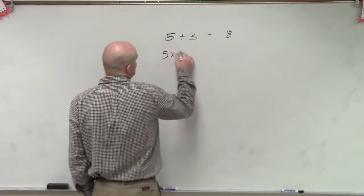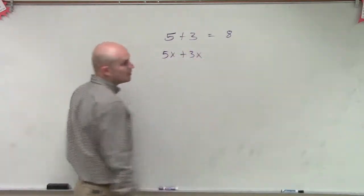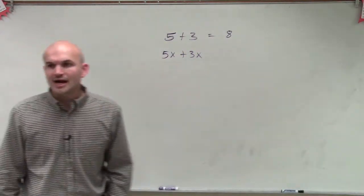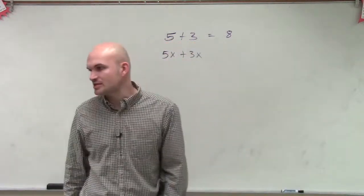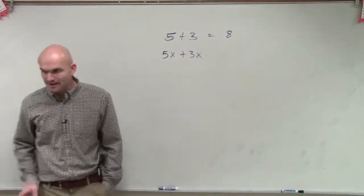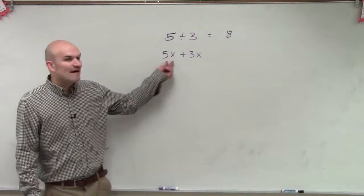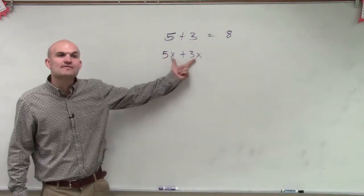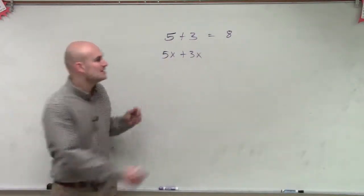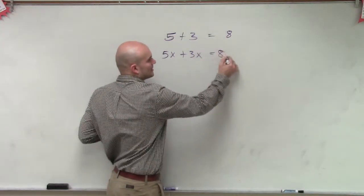And I said 5x plus 3x. Well, ladies and gentlemen, a lot of us started getting confused with adding variables once we started talking about multiplying. So I'll go back through and remind you guys again. 5x plus 3x—those have the same variable factor of x. So therefore, that's equal to 8x.